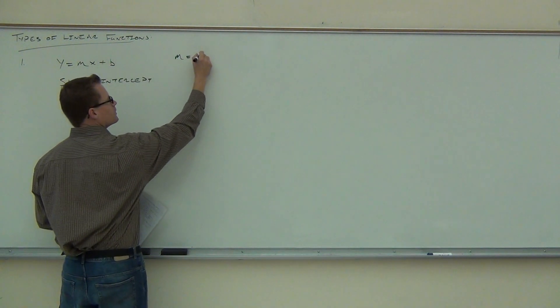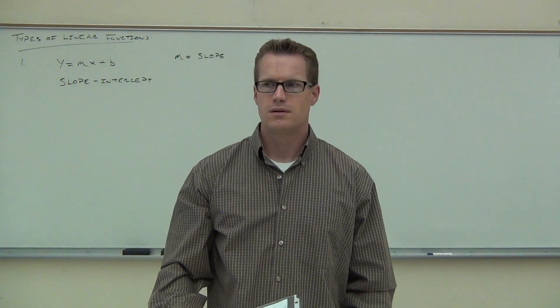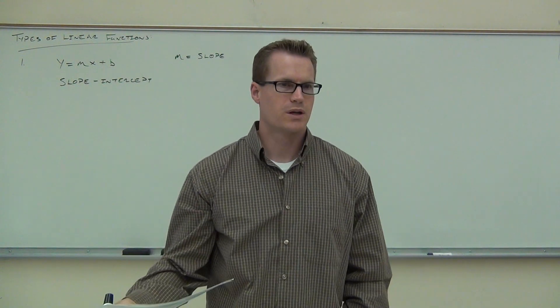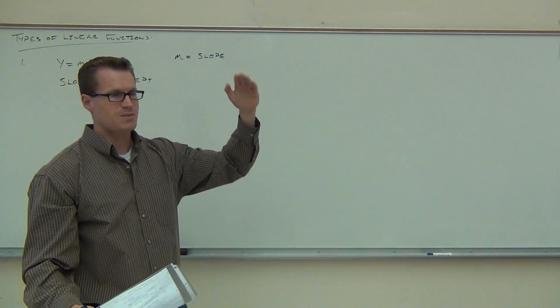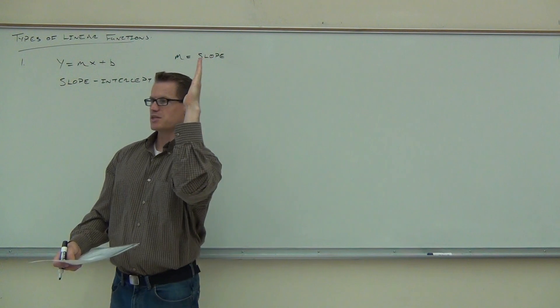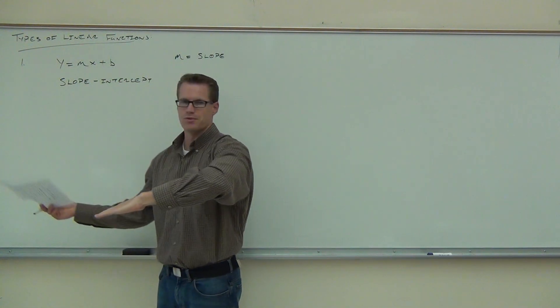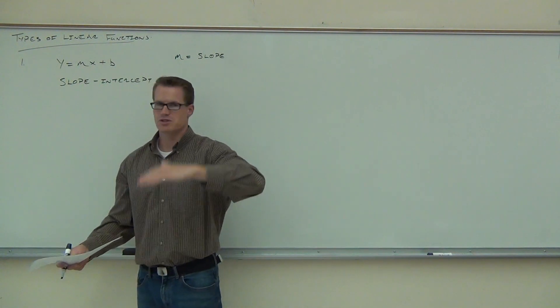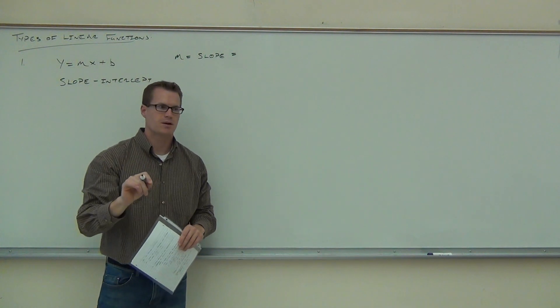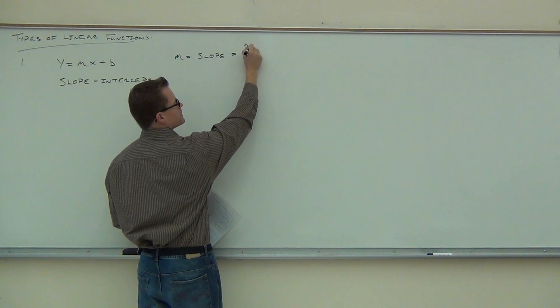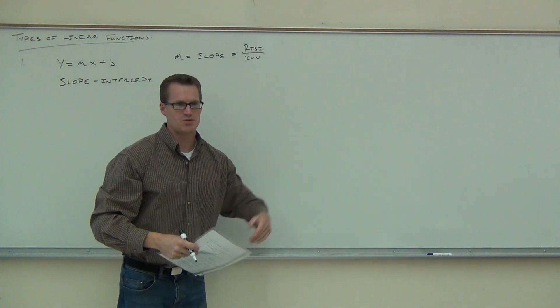You know, the thing about math is that sometimes the names aren't very creative. Like, this could be called the awesome function or the yellow function or something weird. But it's not. They're just pretty much named after what you need or what it gives you. So when you're talking about the slope-intercept form of a line, it's called slope-intercept because it gives you, well, the slope and the intercept. And we're talking about the y-intercept in this case. So the reason why this is called the slope-intercept is because it gives you the slope and the y-intercept. So what letter up here represents the slope? The M. That's right. So M is our slope. Hey, by the way, talking about slope, what is slope? Rise over run. Like stairs, it's rise over run.